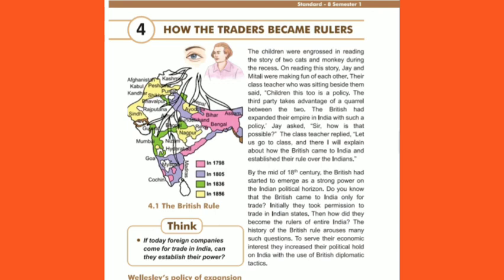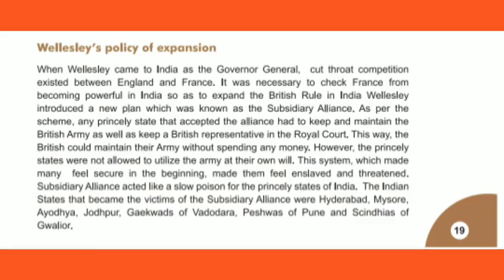With the use of British diplomatic tactics — that means trade, conspiracy, and using other kings against each other — this was the benefit of the Britishers. This was the policy: two people would fight, and a third party would benefit. This is the divide and rule policy.